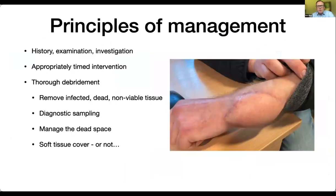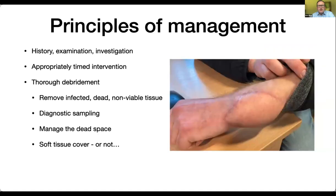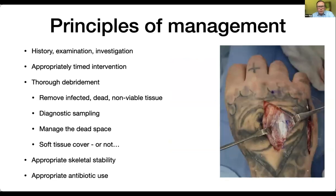Once we've managed the dead space, we need to think about soft tissue cover. It's important that we gain soft tissue cover as early as possible, which enables us to treat patients more effectively with a covered wound. Only then do we start to think about how we're going to stabilise the skeleton. A stable skeleton enables blood supply and immune cells to get to the area of importance, and enables the patient to rehabilitate more quickly. Only then do we talk about appropriate antibiotic use.